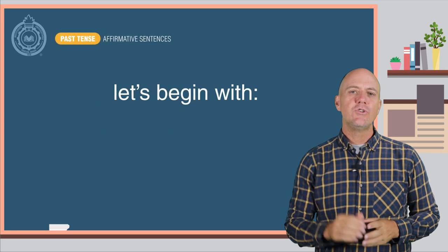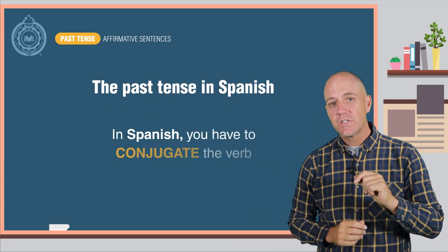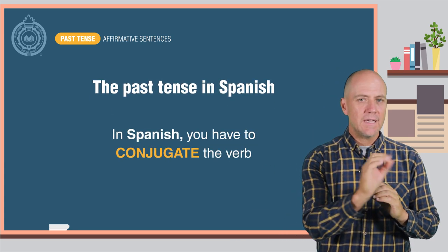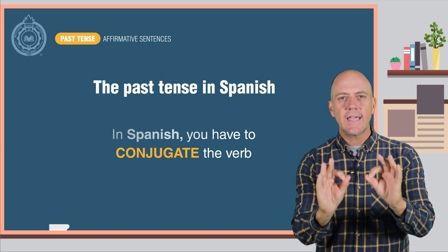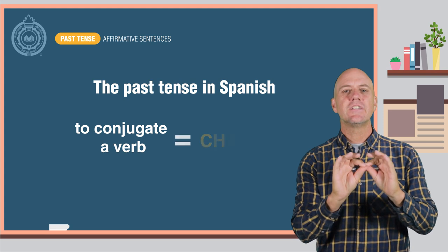Let's begin with what you already know, the past tense in Spanish. In Spanish, to make a sentence in the past tense, you have to conjugate the verb. To conjugate a verb means to change it.